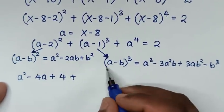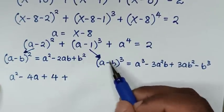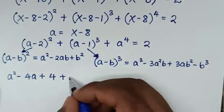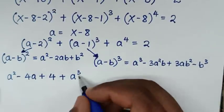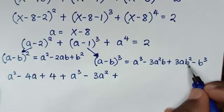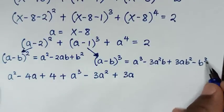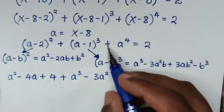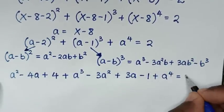For the second part, (a minus 1) cubed: a is the same a, but b is 1. Substituting 1 into the expansion, it will be a power of 3, then minus 3a square, then plus 3 times a times 1 square which is plus 3a, then minus b power of 3 which is 1 power of 3, so minus 1. Then plus a power of 4 is equal to 2.